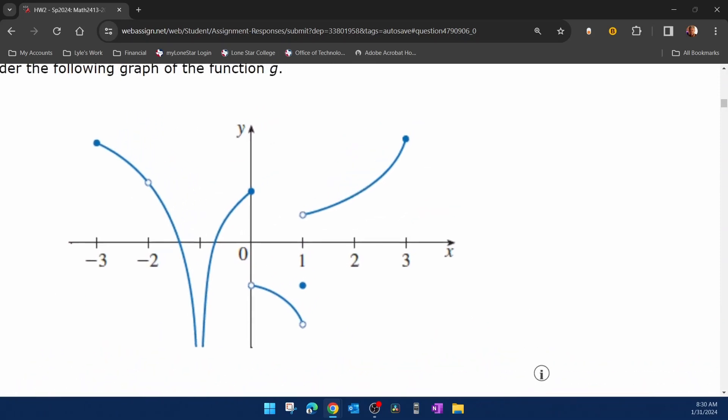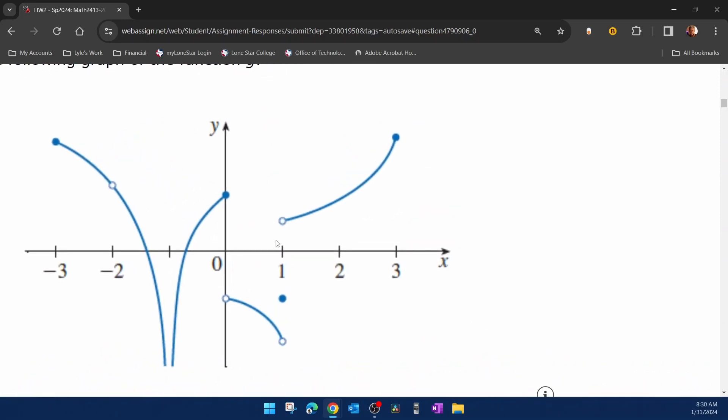All right, so let's find all of the places where this function is discontinuous. That would be at negative two because the function value does not exist.